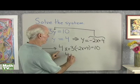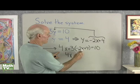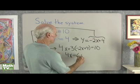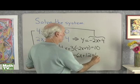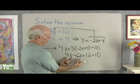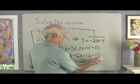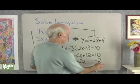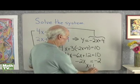So here I'll have 4x, let's see, 3 times negative 2x, negative 6x, plus 3 times 4 is 12, is equal to 10. 4x minus 6x, negative 2x, is equal to, I'll add negative 12 to both sides, negative 2. And so that tells me that x is equal to 1.